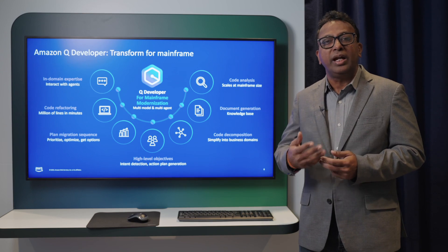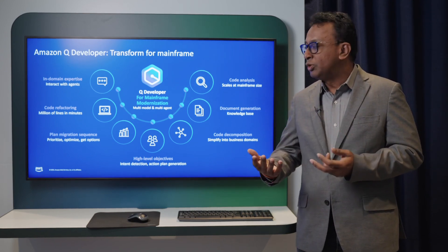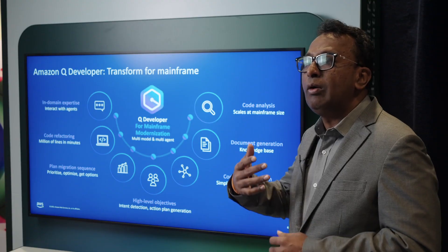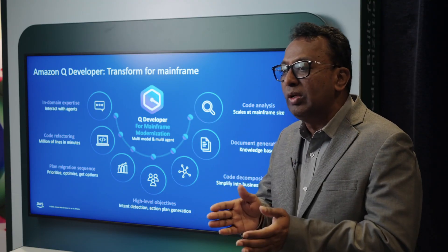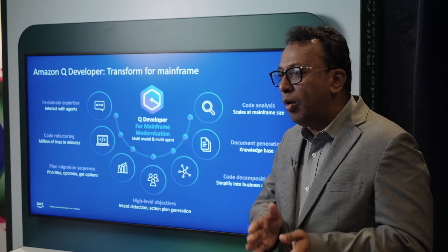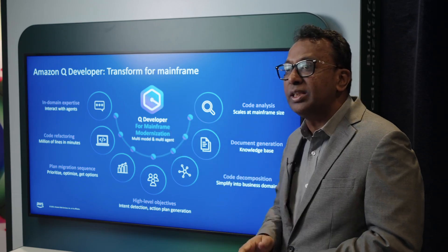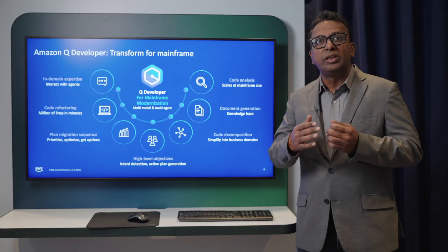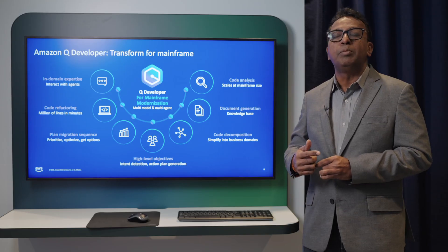You can prioritize and optimize which modules and applications you want to migrate first. It can also help you in converting existing code from COBOL to Java and migrating to purpose-built databases on AWS. With Q Transform and human-in-the-loop, you can also bring in-domain expertise with AWS, interact with agents, and continuously improve the output.